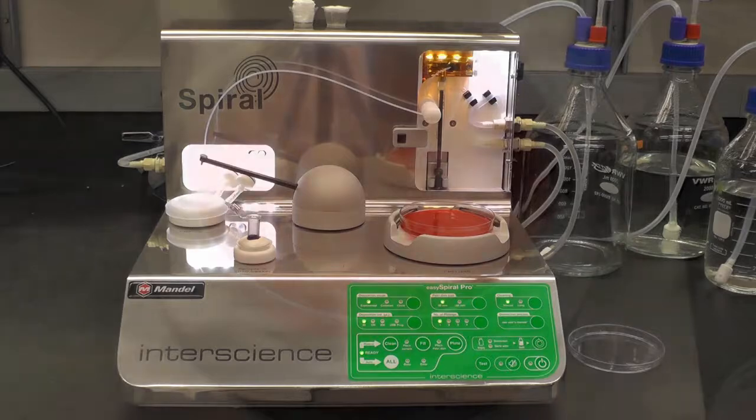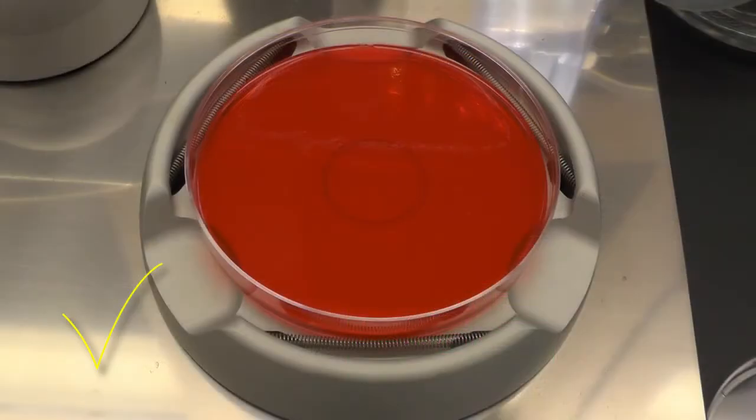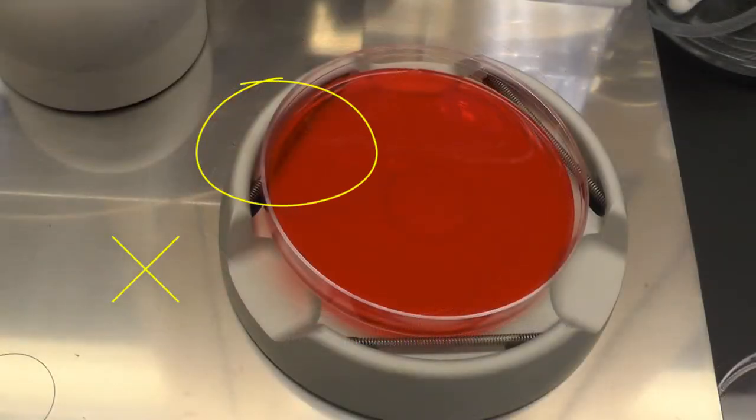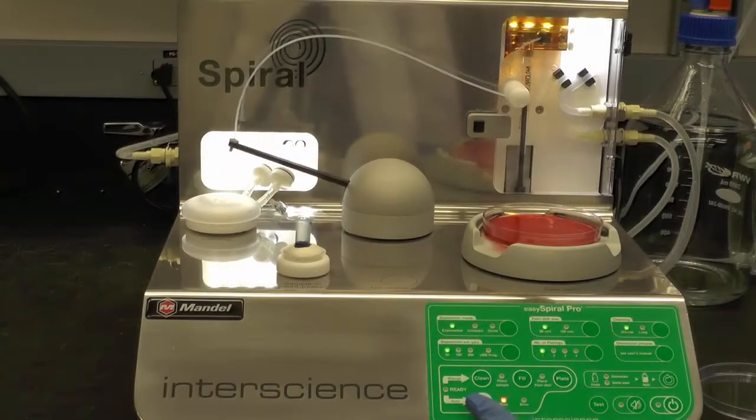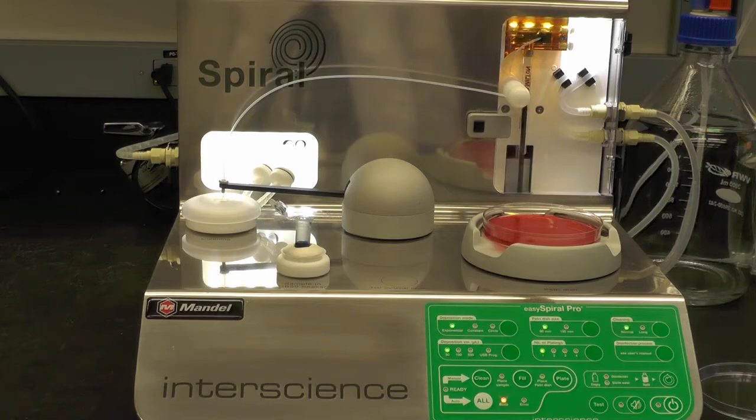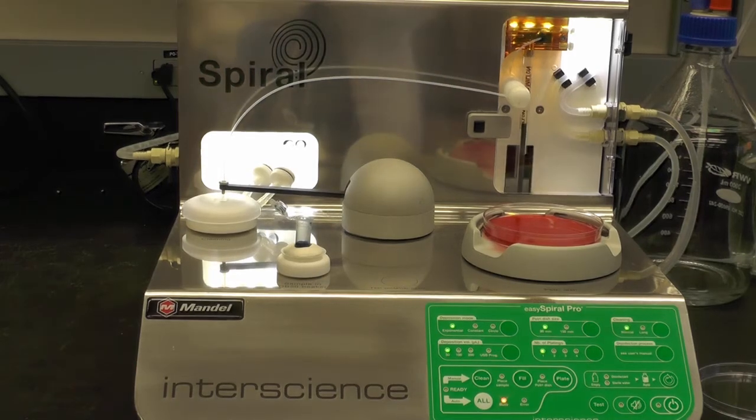Put your plate onto the plate holder and remove the lid. The plate has to be flat and secured by the plate holder. A slanted plate will cause inaccurate plating. Then press the alt button and the cleaning, filling, plating process will start automatically.